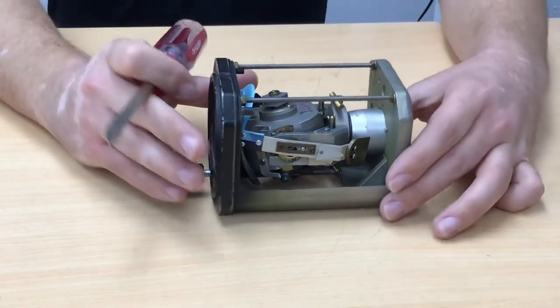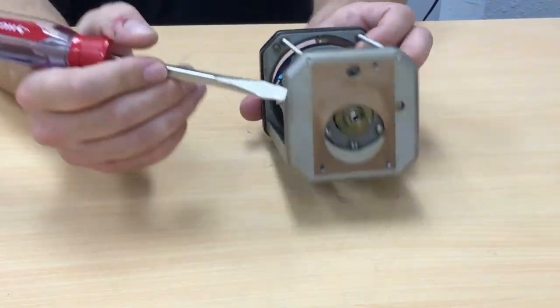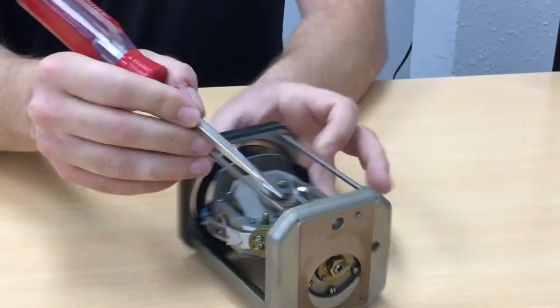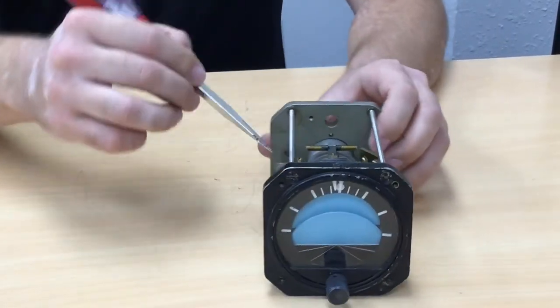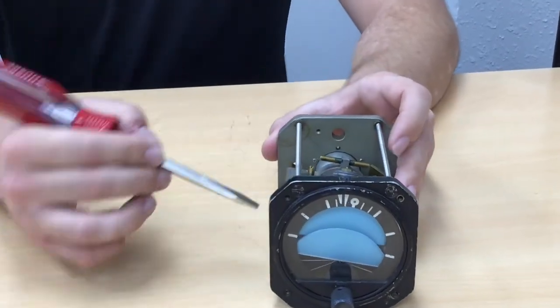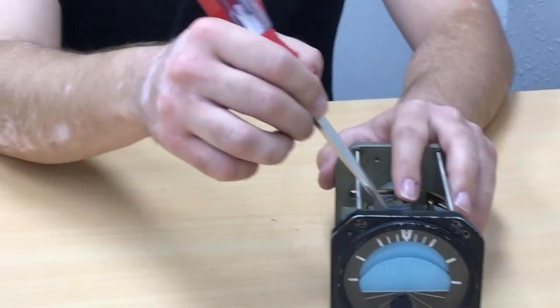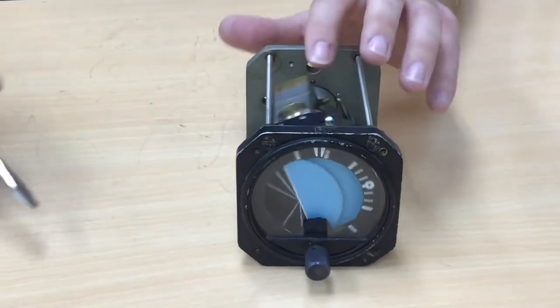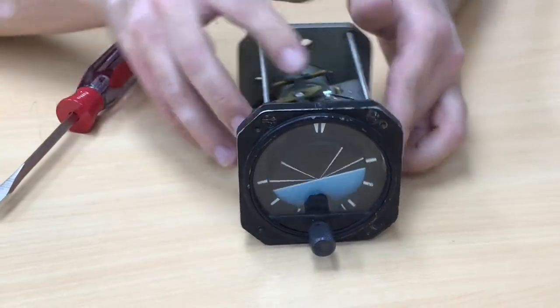So let's take a look at how the air flows in this gyro. It comes in through the inlet there, right there. It will flow through the housing, through the gimbal, through here, into here. And then, go spin the gyro. And then, it's exhausted on the bottom side of the gyro here.